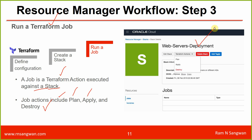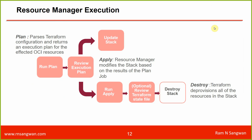Step three: run the Terraform job. A job is a Terraform action executed against a stack — job actions include Plan, Apply, and Destroy, the same as what we've been working with. Resource Manager execution: Plan parses the Terraform configurations and returns an execution plan for affected OCI resources. Review the plan, update the stack if needed, then Apply — Resource Manager modifies the stack based on the plan job results. Optionally review the Terraform files, then Destroy when finished.